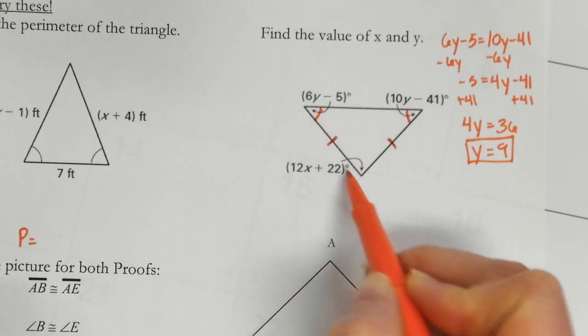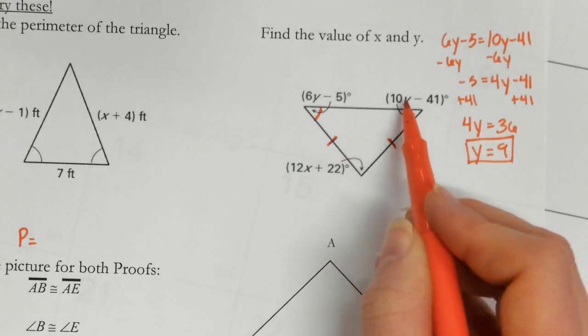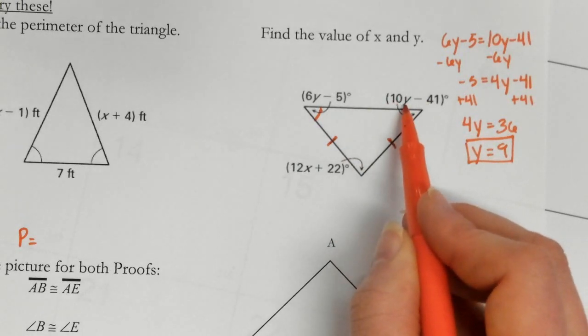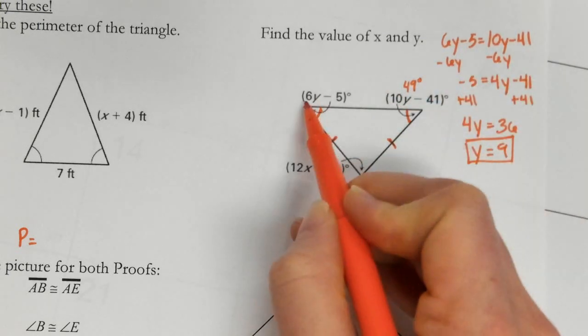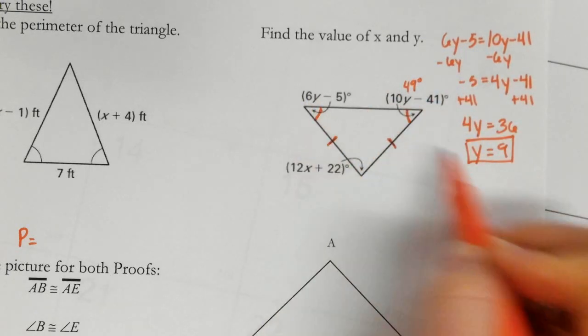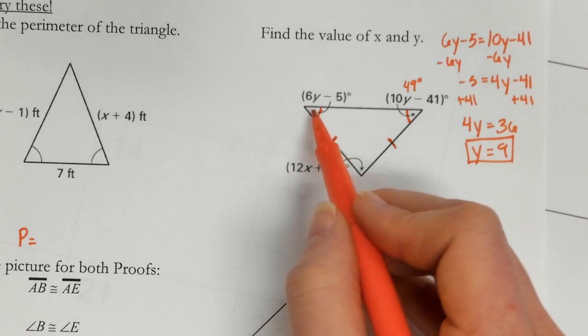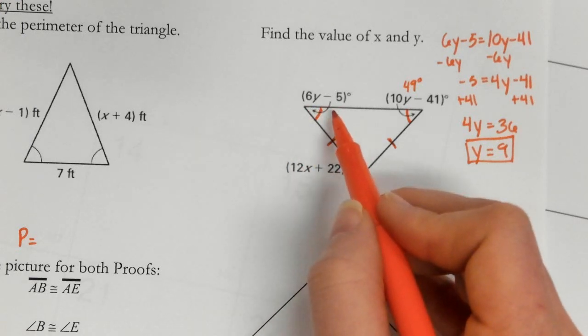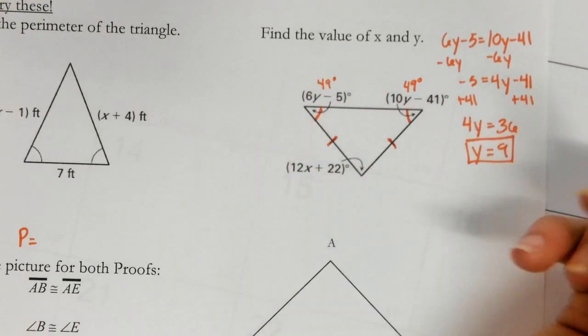Well, now I need to find this angle. Well, in order to do that, I need to plug this back in. So 10 times 9 is 90. 90 minus 41 is going to be 49 degrees. Well, this should also be 49, but we can just check it. 6 times 9 is 54. Minus 5 is 49.